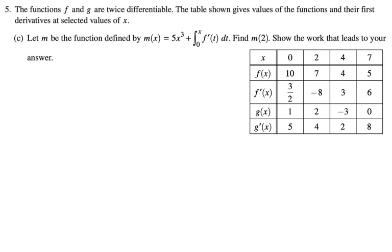Let's look at the next part. Let m be the function defined by m(x) = 5x^3 + integral from 0 to x of f'(t)dt. We want to find m(2). All right, so step one is just sub in two. So m(2) is going to be 5(2)^3, and then plus the integral from 0 to 2 of f'(t)dt. All right, so the first part we can just evaluate. That's arithmetic.